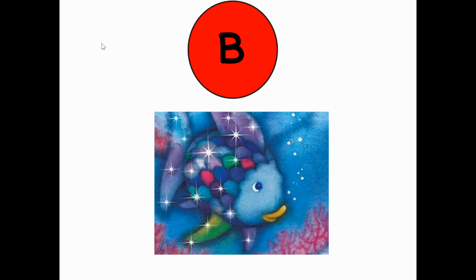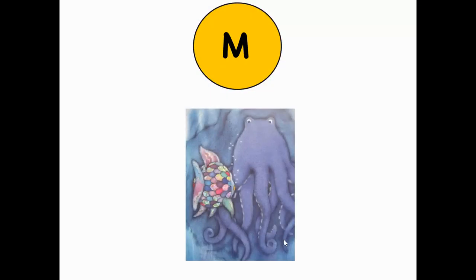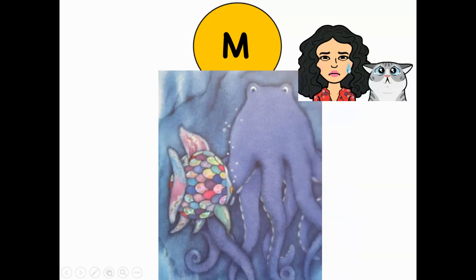Once upon a time, in the deep, deep blue sea, there lived a beautiful fish named Rainbow Fish. Rainbow Fish had the most shining, shimmery, and beautiful scales in the entire ocean. But Rainbow Fish did not want to share any of his scales — he wanted them all for himself. The other fish wanted a shiny scale. Little blue fish went up to him and said, 'Rainbow Fish, can I please have one of your beautiful shiny scales?' And Rainbow Fish said no. Then none of the fish wanted to be his friends, and Rainbow Fish became very, very sad and lonely because he had no one to talk to or play with.